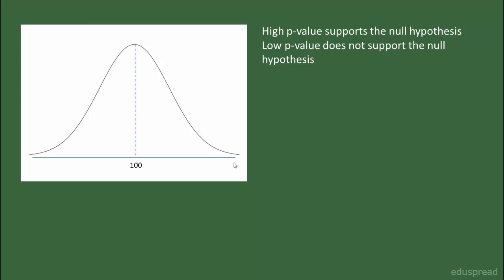Think of it this way. If your P-value is 1%, then that means your observed sample statistic is somewhere in the extreme right. So in this case, if the rejection region is 5% of the distribution, then your observed sample statistic will lie in the rejection region, and this is evidence against the null hypothesis — so we will reject the null hypothesis. On the other hand, if the P-value is high, say 10%, then the observed sample statistic is somewhere closer to the center. And if the rejection region is 5%, then the observed sample statistic does not lie in the rejection region, and therefore this is evidence in support of the null hypothesis — so we do not reject the null hypothesis.